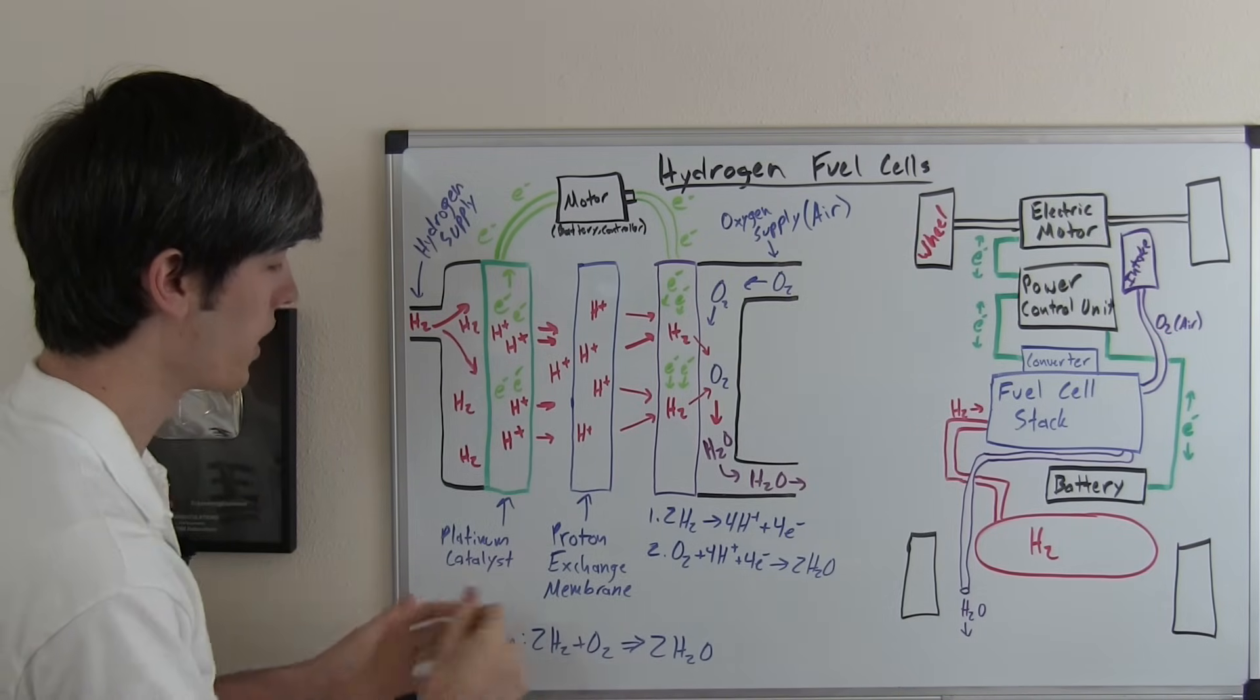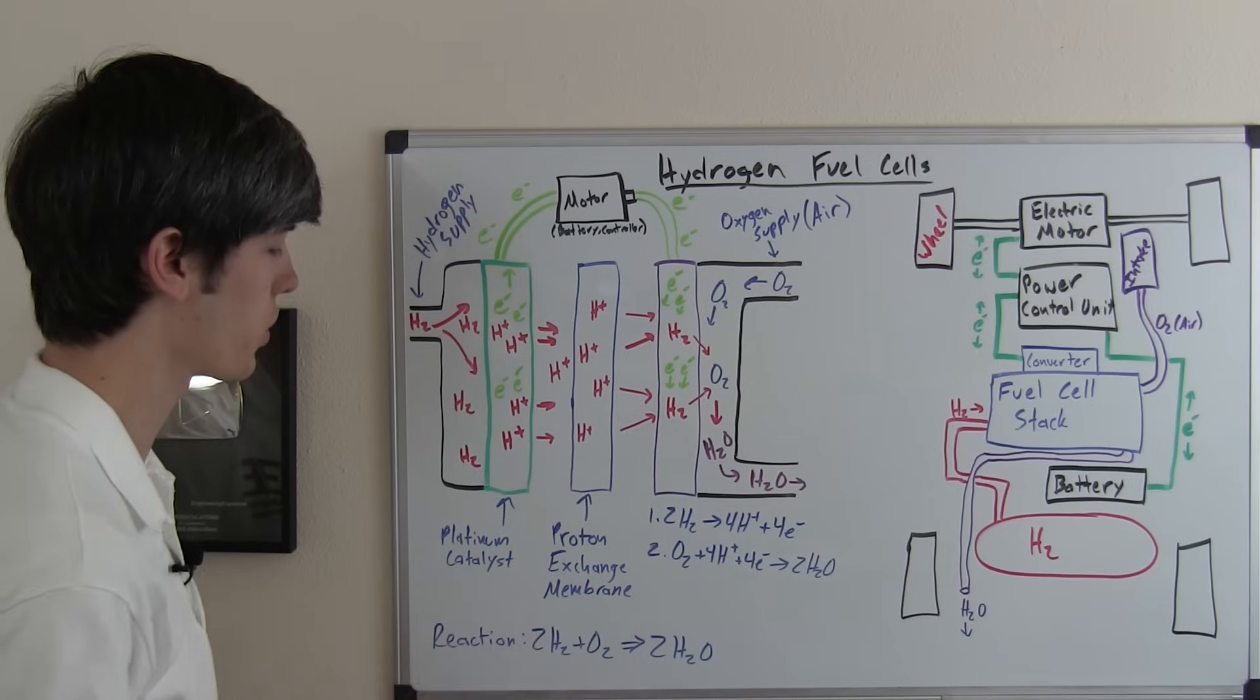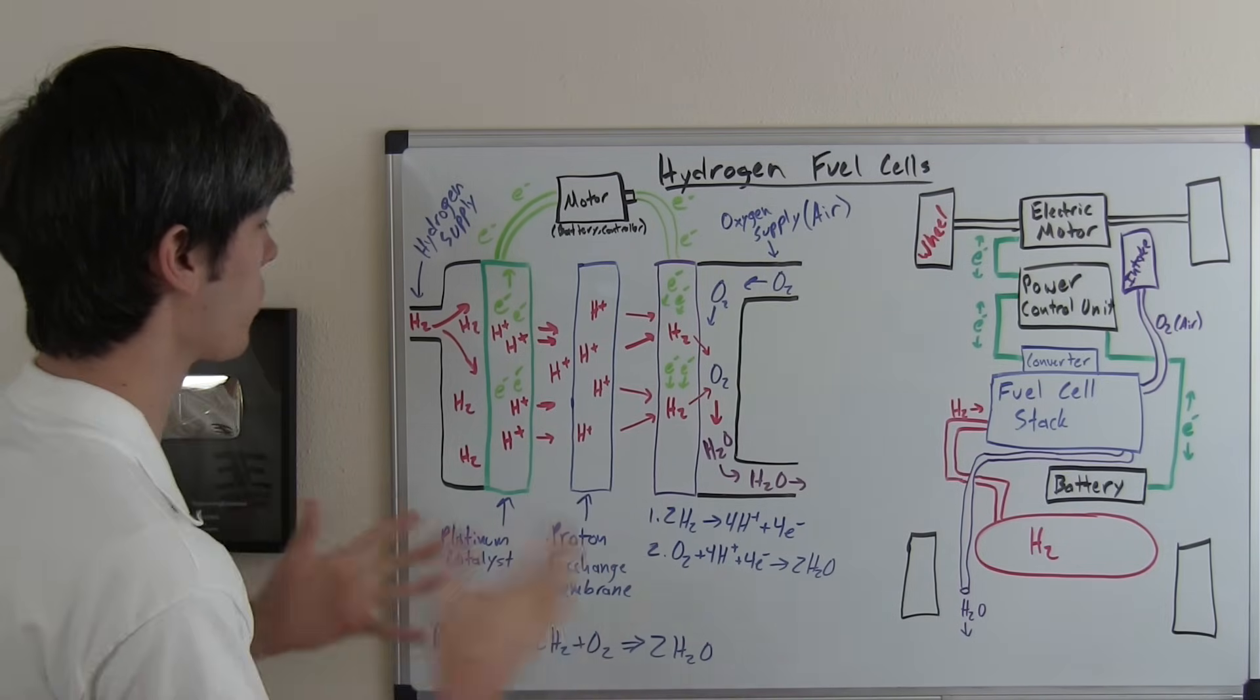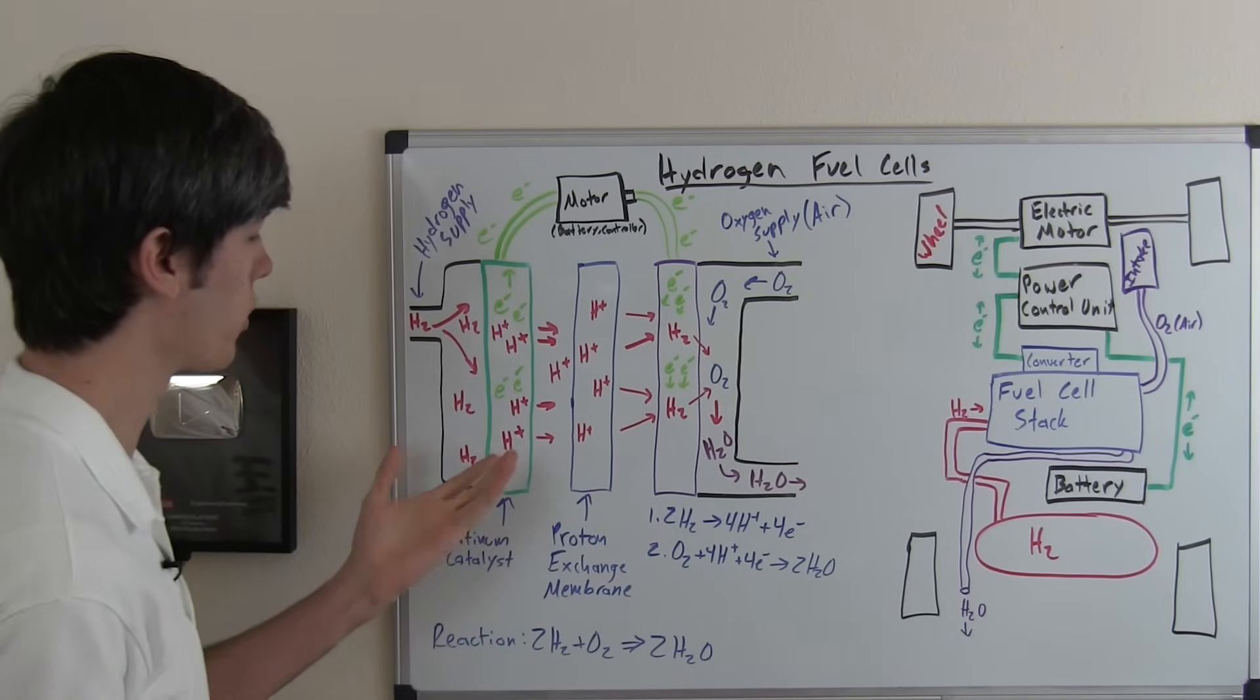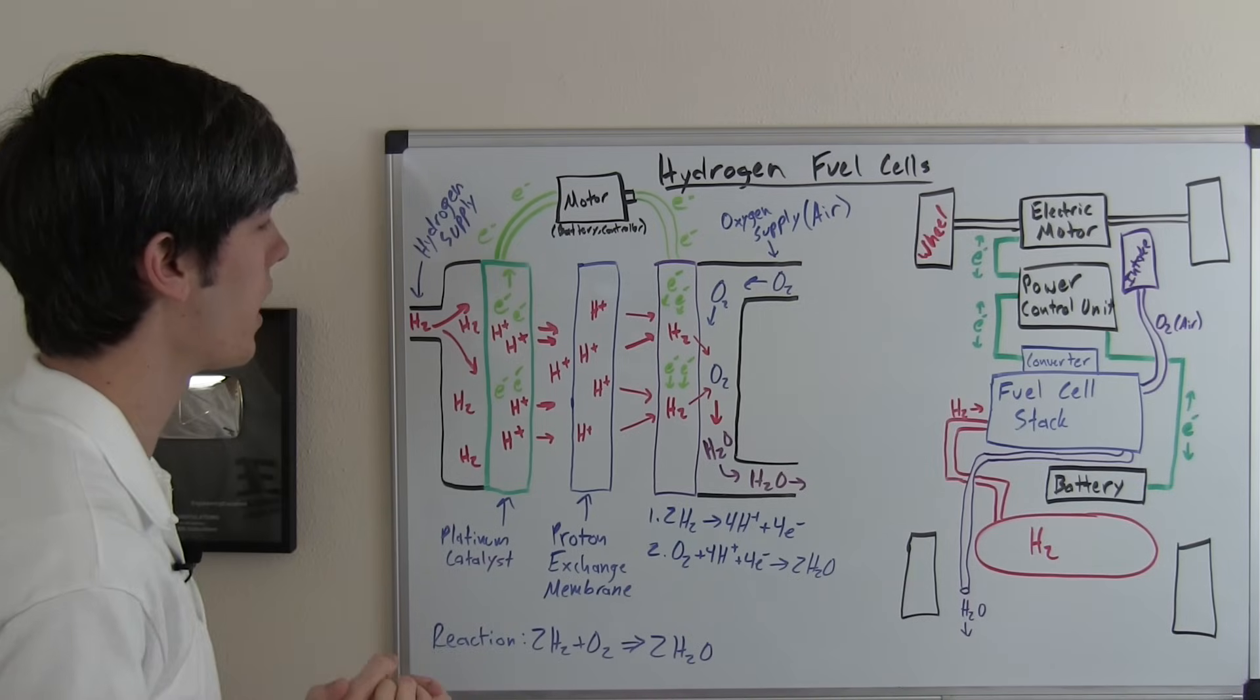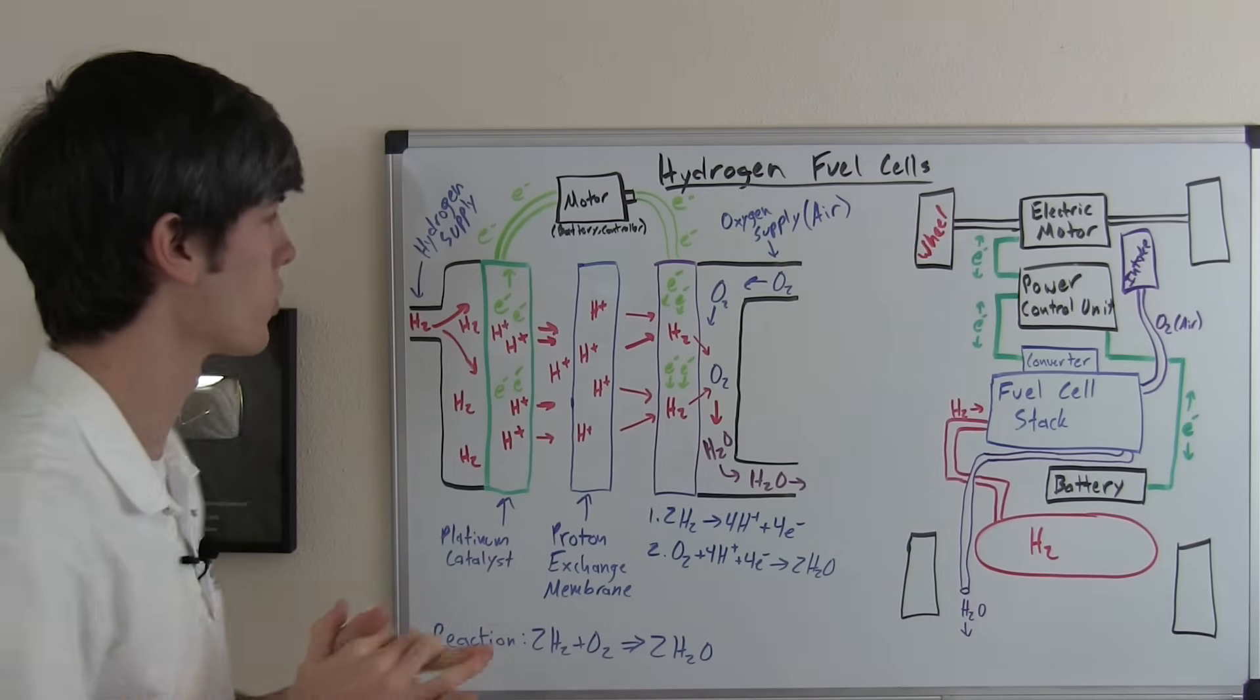Now the next stage is to pass through the proton exchange membrane and this is only going to allow positively charged things to pass through. So here we have these positively charged hydrogens. So they can pass through but the electrons cannot, nor neutral charged items.